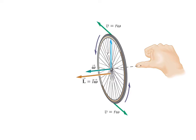For the right-hand rule: take your fingers and curl them in the direction the wheel is spinning, then stick out your thumb. The direction your thumb points is the direction of angular velocity. Angular acceleration works the same way - curl your fingers in the direction the wheel is speeding up or slowing down. If it's speeding up, curl them the same way it's going and the thumb points the same direction as angular velocity. If it's slowing down, reverse your fingers and your thumb comes out the opposite way, which makes sense since angular acceleration would be opposite to angular velocity when decelerating.